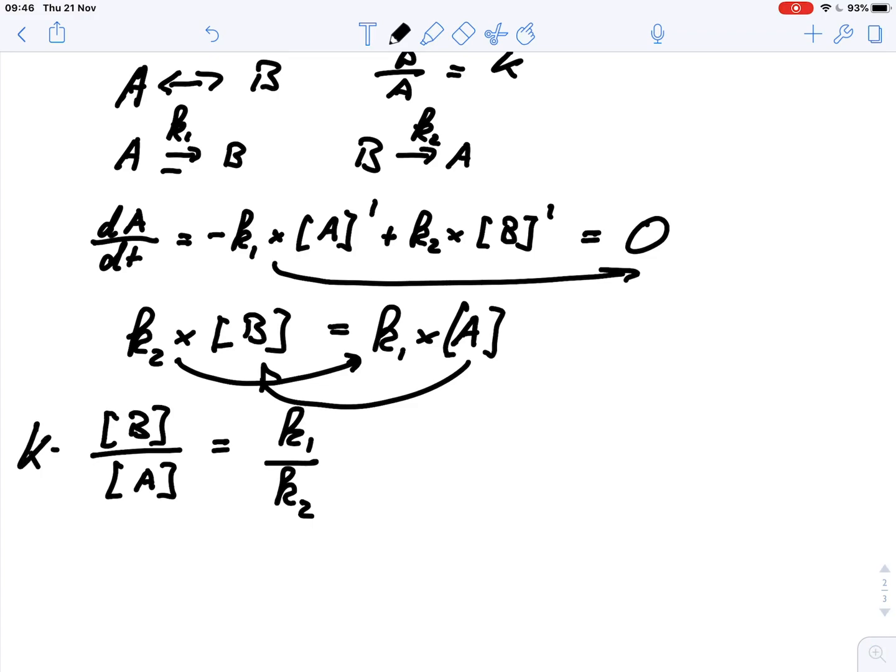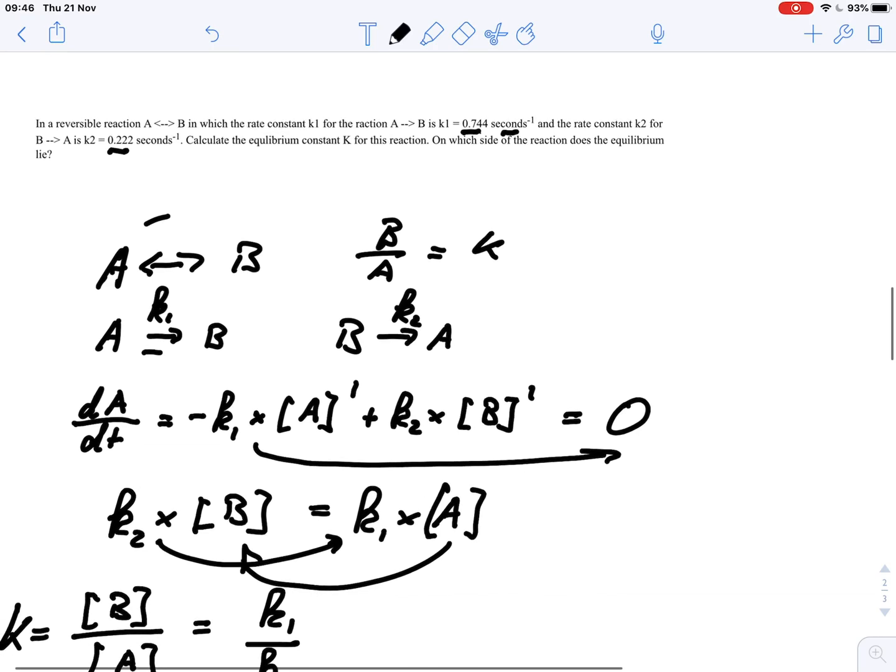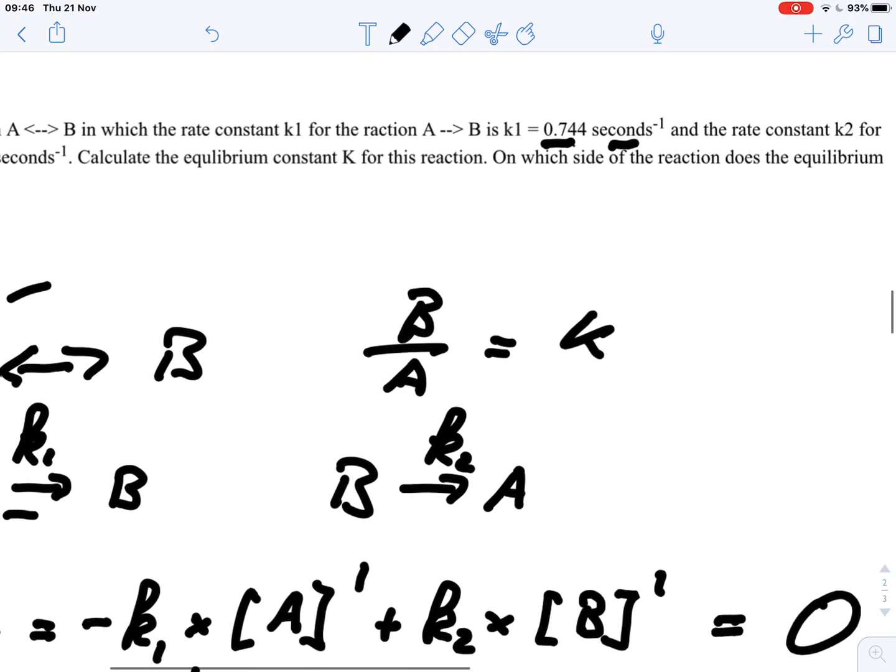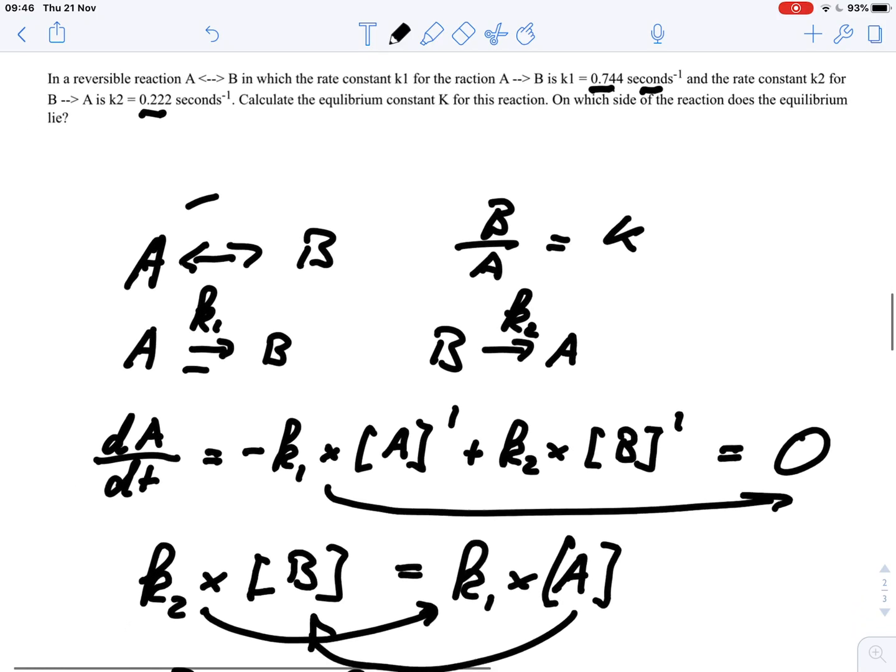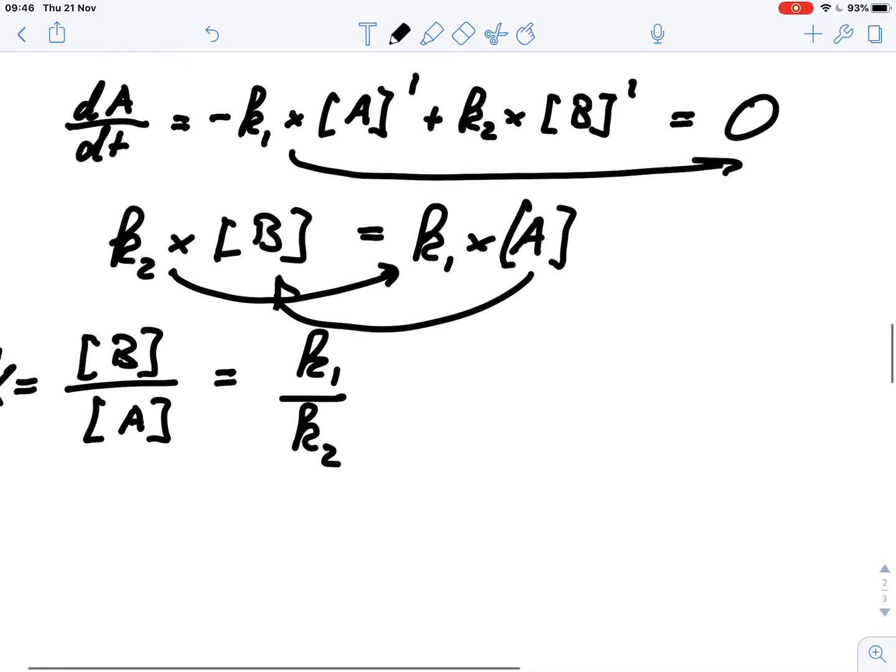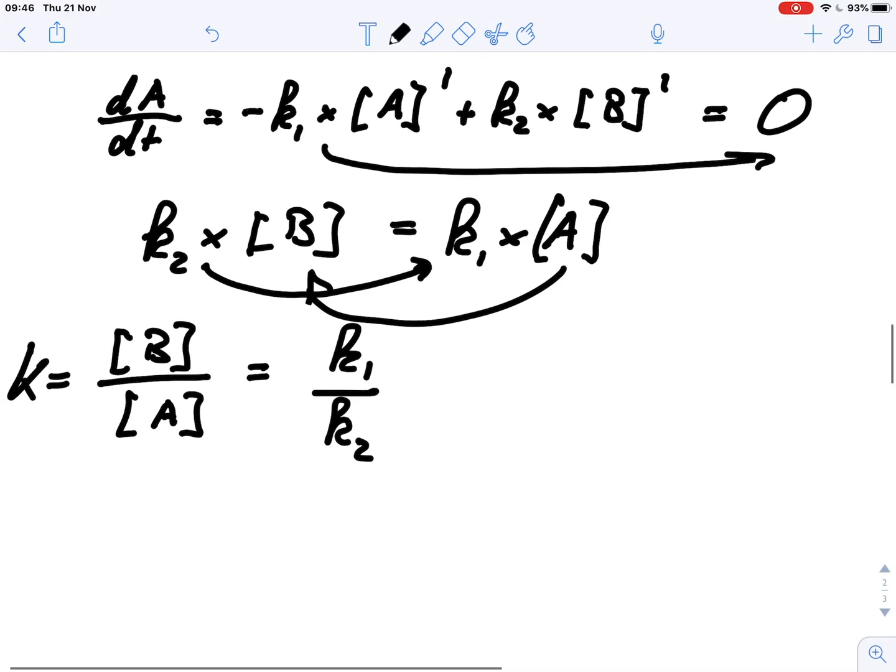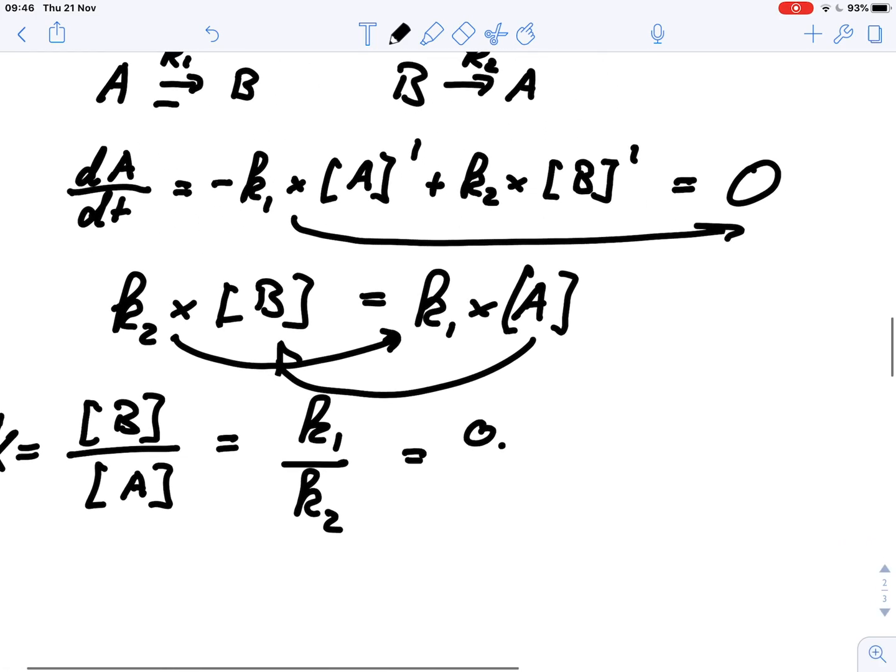So I can express our equilibrium constant k with just these two rate constants. Now we were given 0.744 per second and 0.222 per second as the rate constants. So we can put that in here: equals 0.744 per second to the minus 1 divided by 0.222 per second to the minus 1.